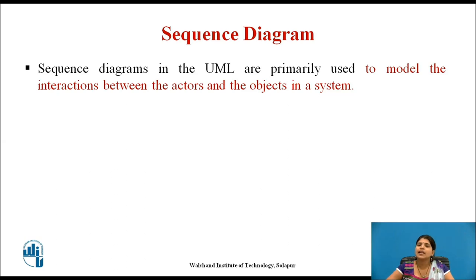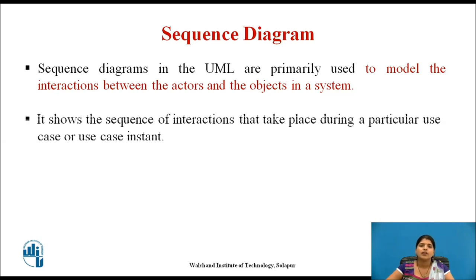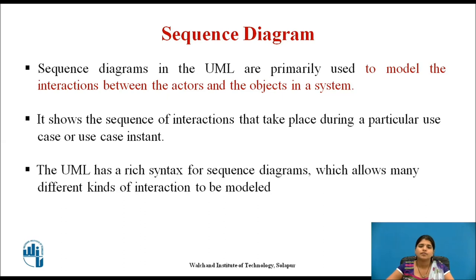Let us see the second approach of interaction modeling, that is sequence diagrams. In UML, sequence diagrams are primarily used to model the interactions between actors and objects in a system, and the interactions between the objects themselves. A sequence diagram shows the sequence of interactions that take place during a particular use case or use case instance. The UML has a rich syntax for sequence diagrams, which allows many different kinds of interaction to be modeled.